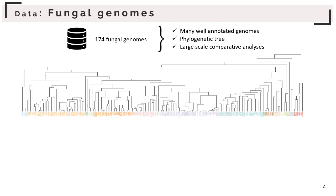We worked with 174 fungal genomes. With these many well-annotated genomes, we were able to construct a very well-covered fungal phylogenetic tree that enables us to do a very large-scale comparative analysis. Fungi is an excellent model for these studies because they exhibit a wide variety of metabolic profiles.